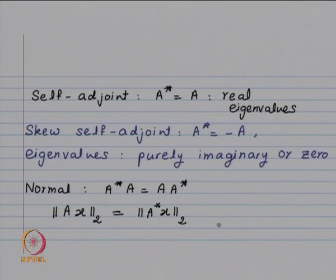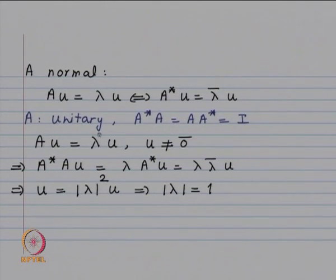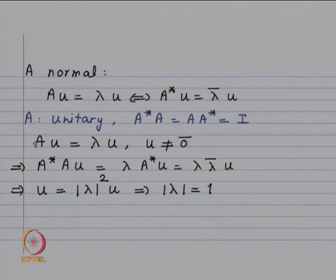As a consequence, Au = lambda u if and only if A*u = lambda-bar u. Now let us look at a unitary matrix, meaning A*A = AA* = I. In particular, a unitary matrix is a normal matrix.